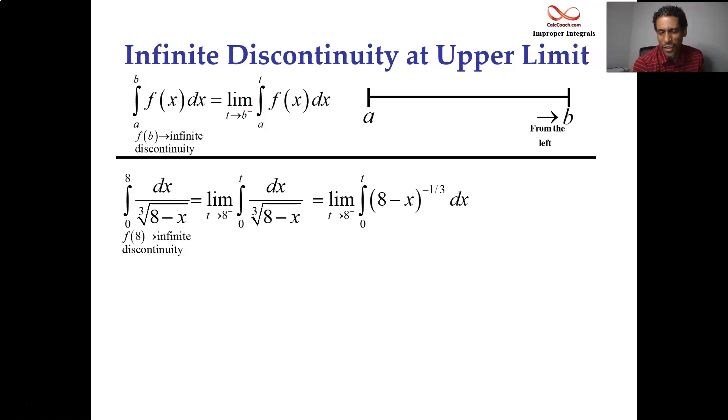I mean, you could do this without a u sub, but it helps. You won't miss a negative, I hope, if you do the u sub. If you let u equal 8 minus x, the du is a negative 1 times dx. So it's like having u to the negative 1 3rd with the negative 1 out front. Antiderivative of u to the negative 1 3rd, you add 1 to it, so you get u to the 2 3rds, but you don't divide by 2 3rds, you multiply by 3 halves. But that negative is out front, so your antiderivative is negative 3 halves, the entirety of 8 minus x, who is raised to the 2 3rds.